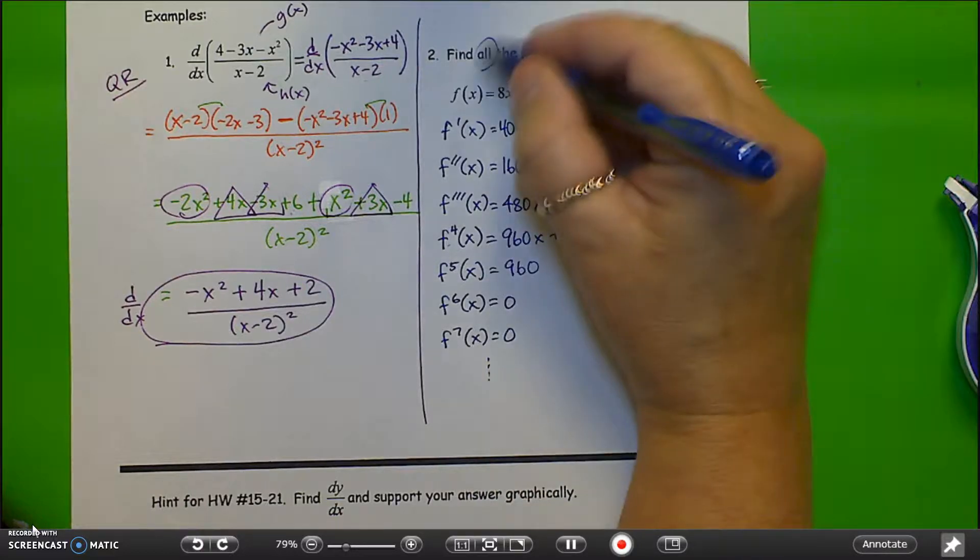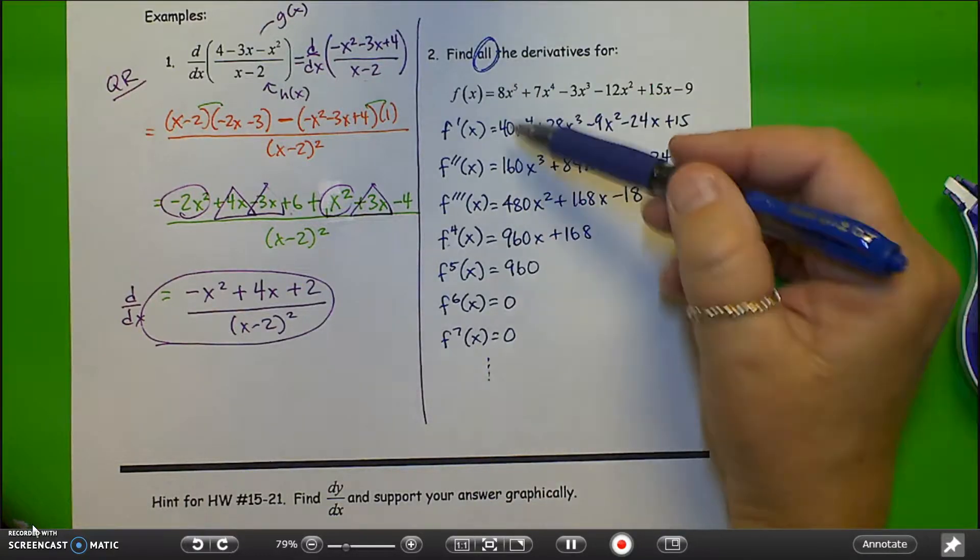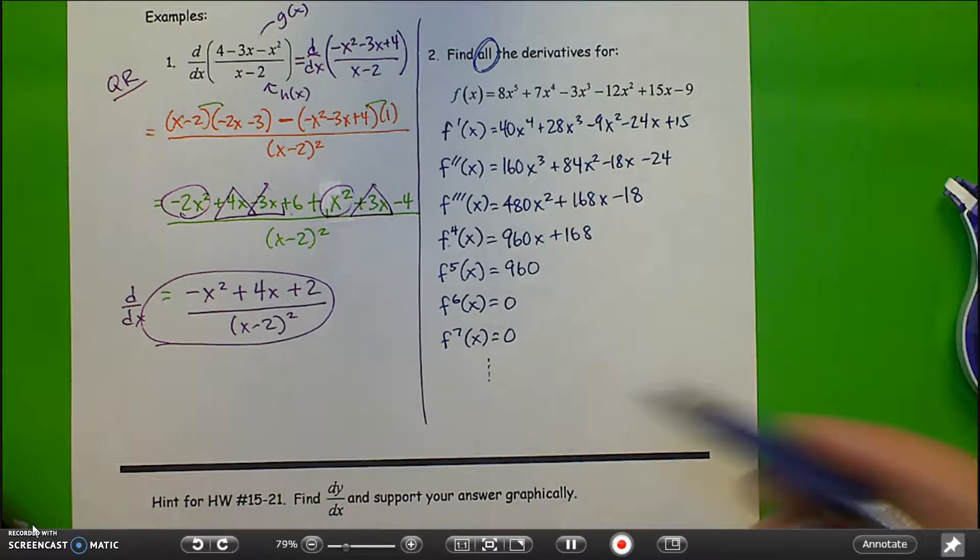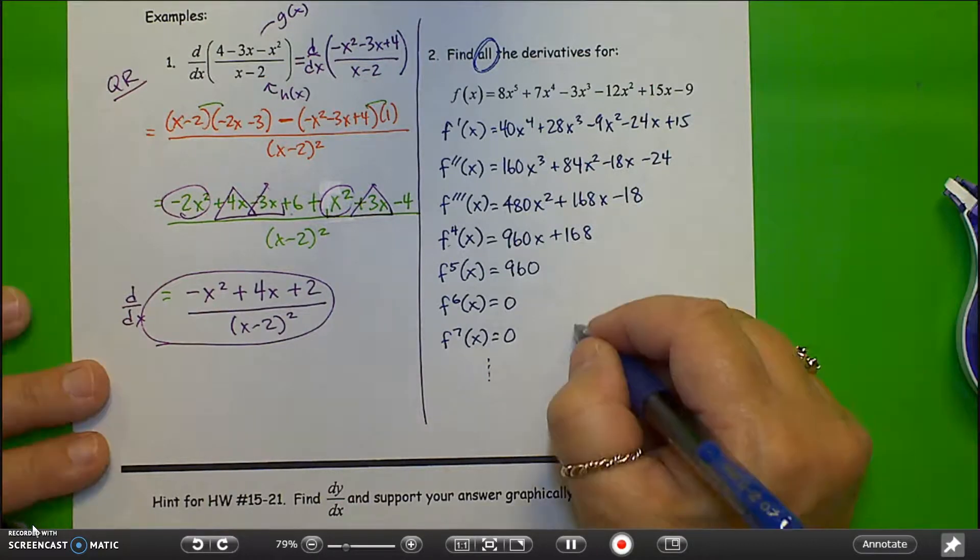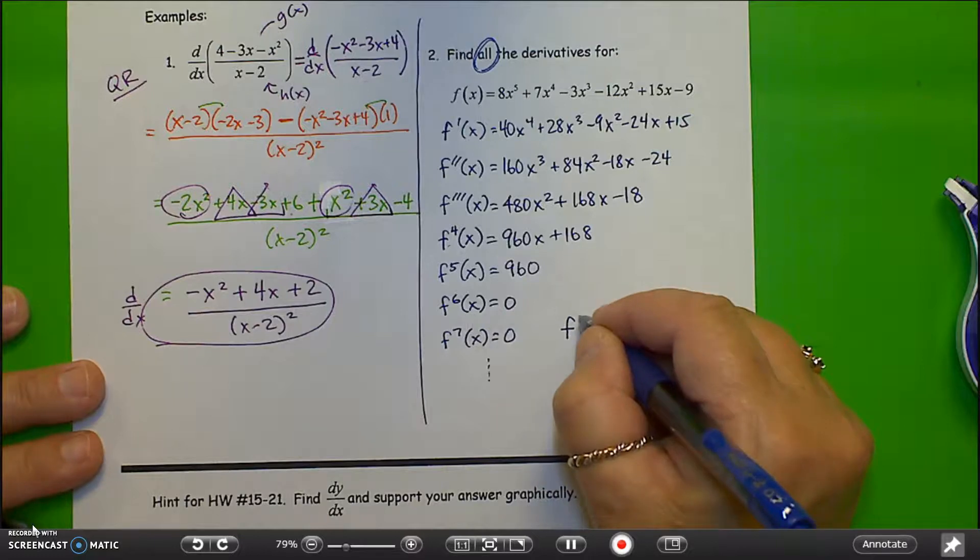So in order to truly show all the derivatives, we've really only shown the first seven here. To show all of the derivatives, we need to add this final notation.